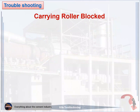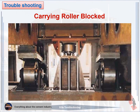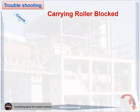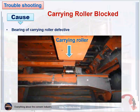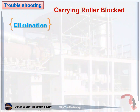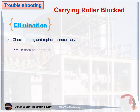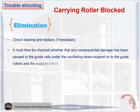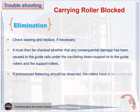Problem 8: Carrying roller blocked. The cause: bearing of carrying roller defective. How to eliminate: one, check bearing and replace if necessary. Two, it must then be checked whether any consequential damage has been caused to the guide rails under the oscillating beam support, or to the guide rollers and support rollers. Three, if pronounced flattening is observed, the rollers have to be completely replaced. Four, worn guide rails shall likewise be replaced.